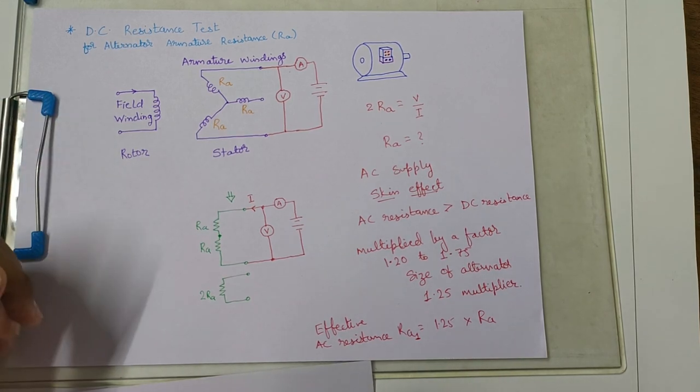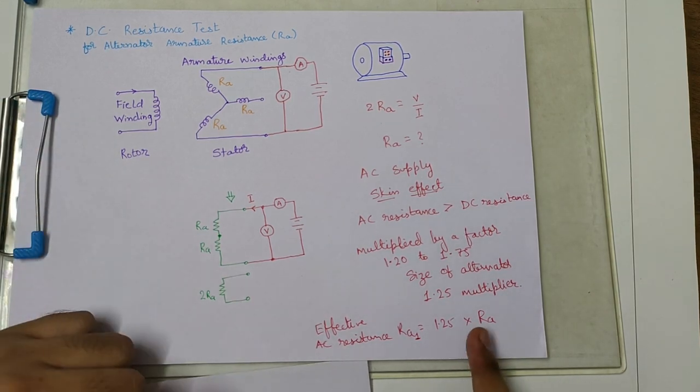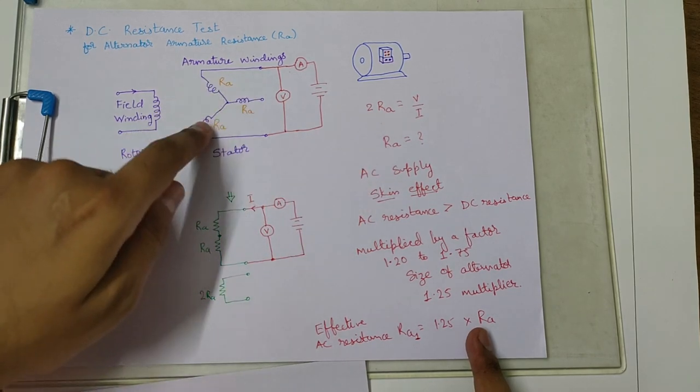So this is how we calculate the armature resistance. It is the per phase value, it is the resistance of one phase.